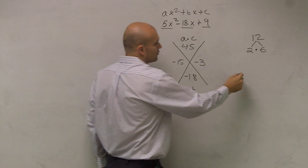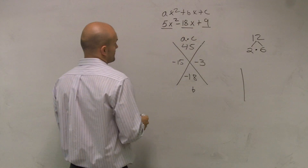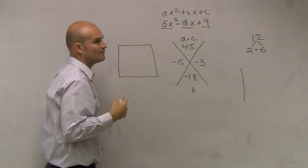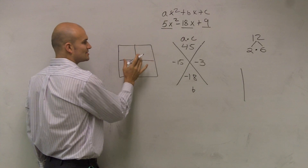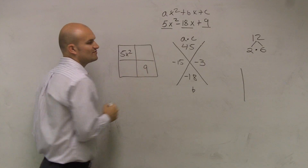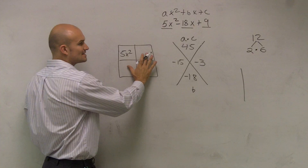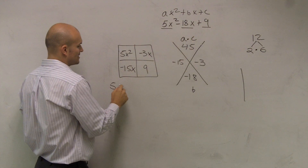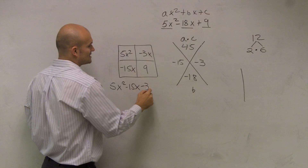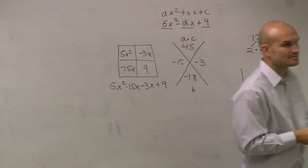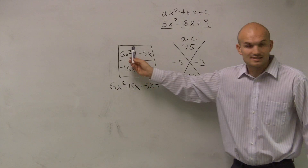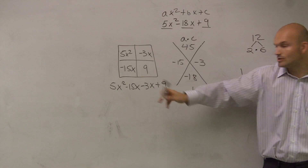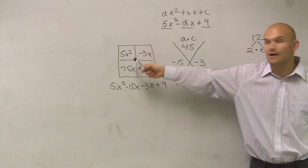Going back to what we've already talked about, we can represent that in two different ways. When we're factoring, you can think about it as a rectangle, and we're simply trying to figure out what the two side lengths are. So the two boxes are negative 15x and negative 3x. Or we can simply rewrite this as 5x² - 15x - 3x + 9. If you notice, negative 15x minus 3x gives negative 18x, so I didn't change the answer at all.